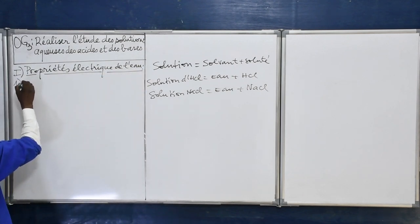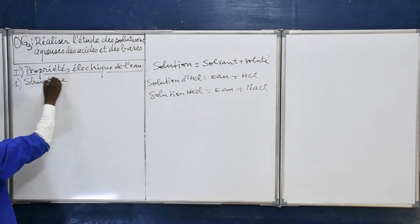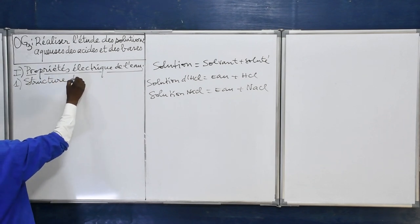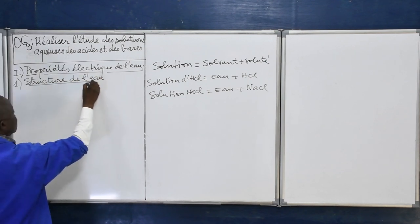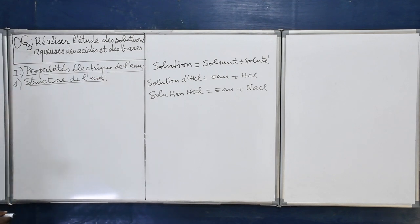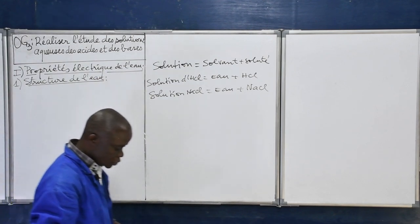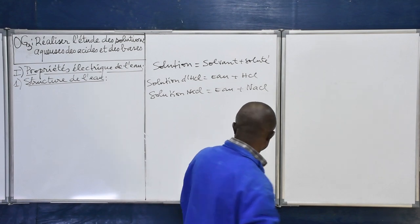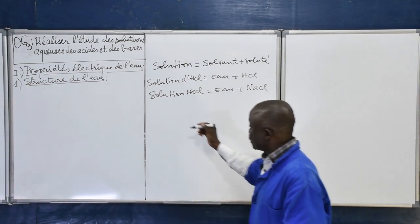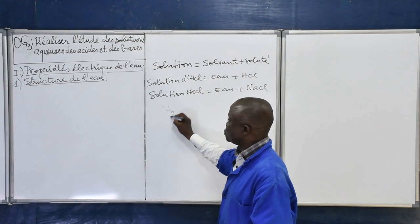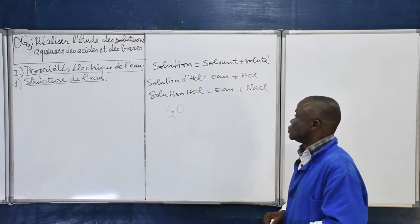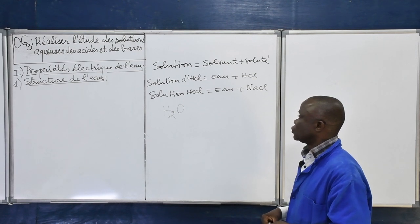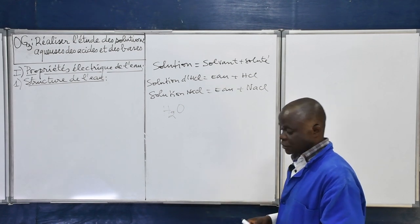Structure de la molécule d'eau. La formule de la molécule d'eau, c'est H₂O. L'eau est constituée de deux atomes d'hydrogène liés à un atome d'oxygène.